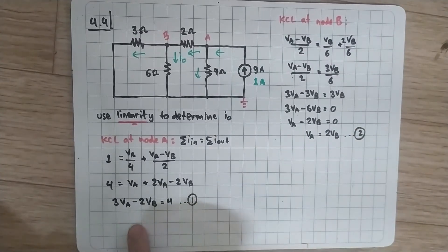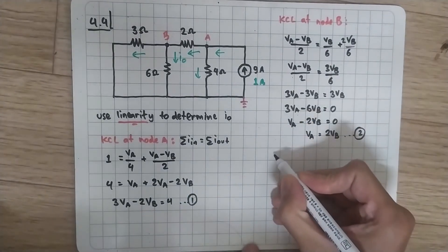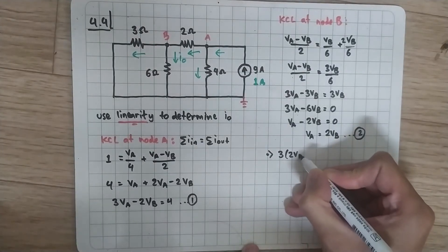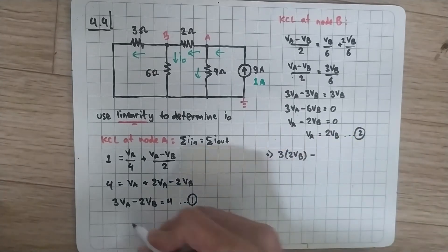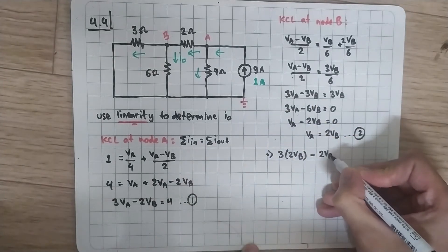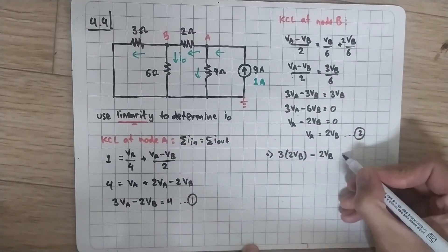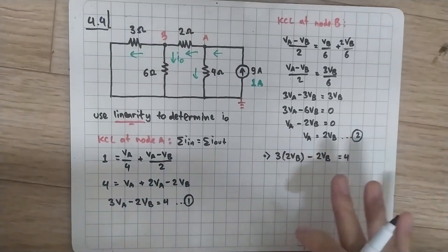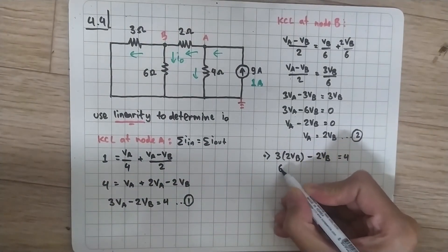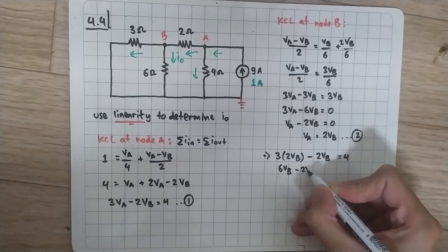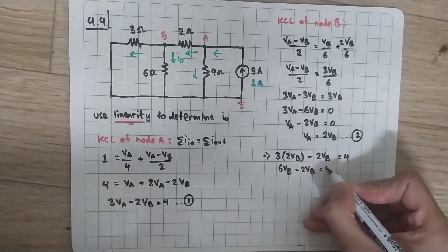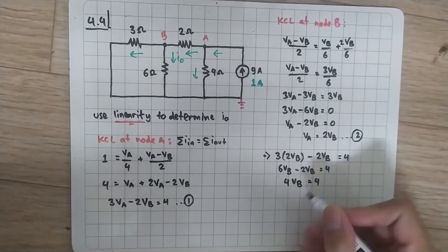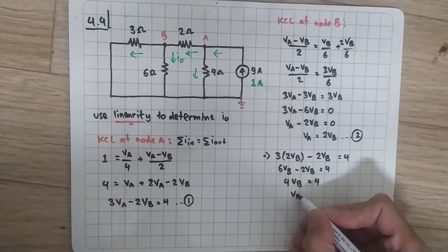Substituting equation 2 into equation 1: VA = 2VB, so 3 times 2VB minus 2VB = 4. This gives 6VB - 2VB = 4, so 4VB = 4, and therefore VB = 1.